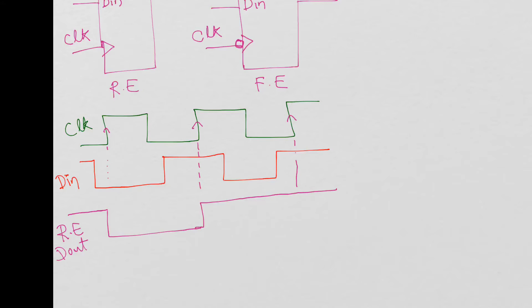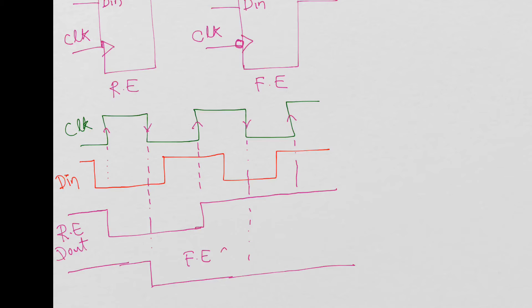Now let's look at the falling edge triggered flip-flop — it looks at the falling edges of the clock. Assuming Q out starts high, at the falling edge it goes low, and at the next falling edge it sees DN is still low so it remains low. This is the Q out for the falling edge triggered flip-flop.